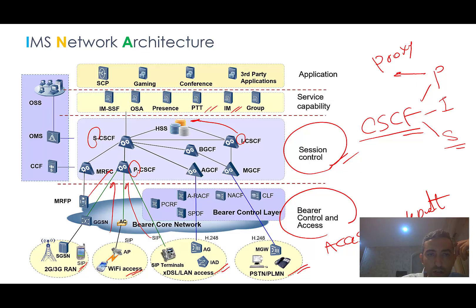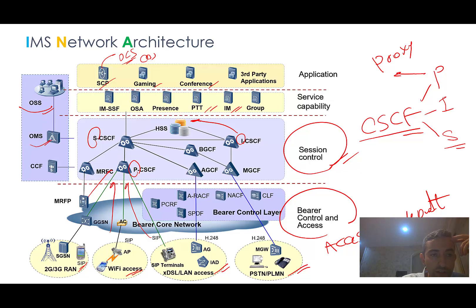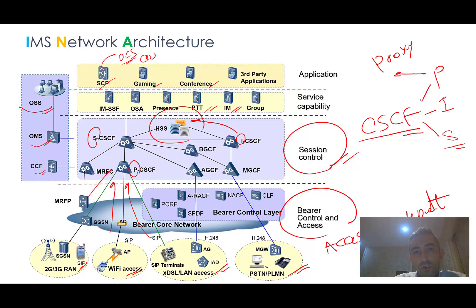We also have the service layer, which includes servers for instant messaging, push-to-talk, third-party applications like conferencing and gaming, and the signaling connection part. This can include OCS — Online Charging System — and CBS — Convergent Billing System. We also have Operation Support System tools, Operation and Maintenance systems, and CCF — Charging and Control Function. The HSS here is the same HSS described in previous episodes — no difference.